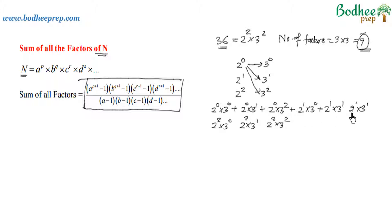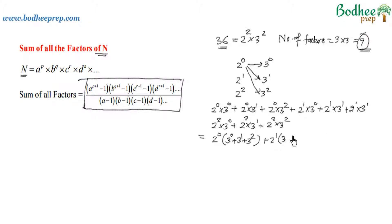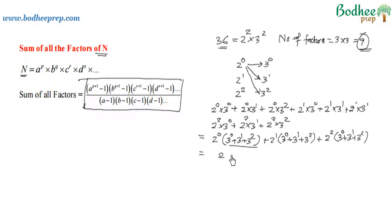Let me put a plus sign between these factors. Now I will take the common terms together. The first three terms can be written as 2 to the power 0 into (3 to the power 0 plus 3 to the power 1 plus 3 to the power 2). Similarly, the next three terms can be written as 2 to the power 1 multiplied with (3 to the power 0 plus 3 to the power 1 plus 3 to the power 2), and the last three terms as 2 to the power 2 multiplied with the same expression. Taking this common expression out, we are left with (2 to the power 0 plus 2 to the power 1 plus 2 to the power 2) multiplied with (3 to the power 0 plus 3 to the power 1 plus 3 to the power 2). This product gives the sum of all the factors.